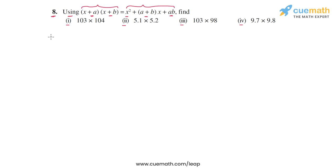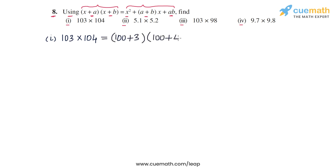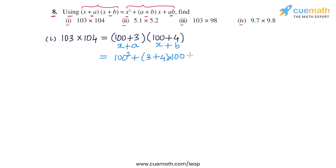Let's start with the first part: calculating 103 × 104. We express this in the form (x + a)(x + b), so 103 = 100 + 3 and 104 = 100 + 4. This resembles (x + a)(x + b) where x = 100, a = 3, and b = 4. Applying the identity gives us 100² + (3 + 4) × 100 + 3 × 4.